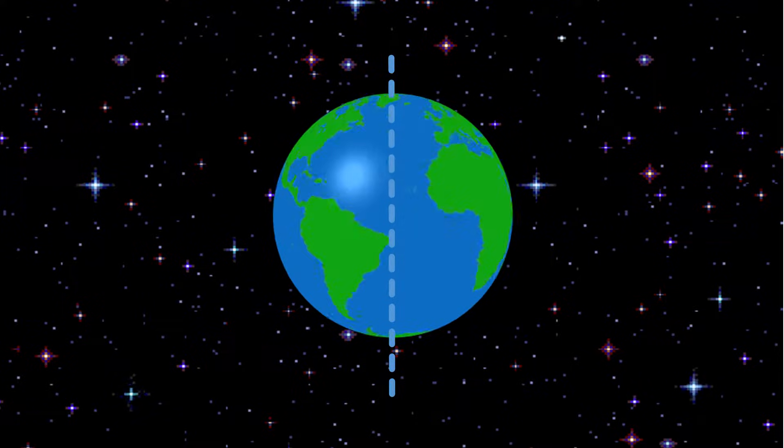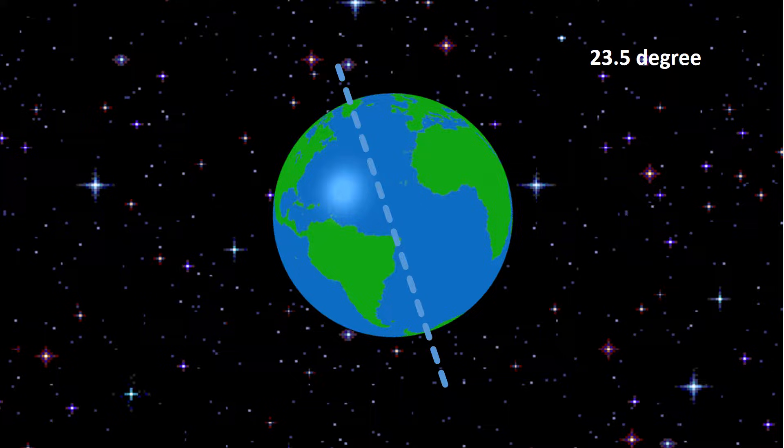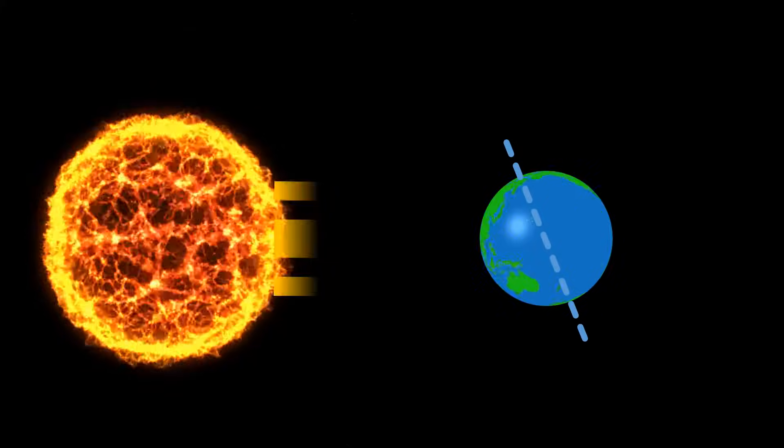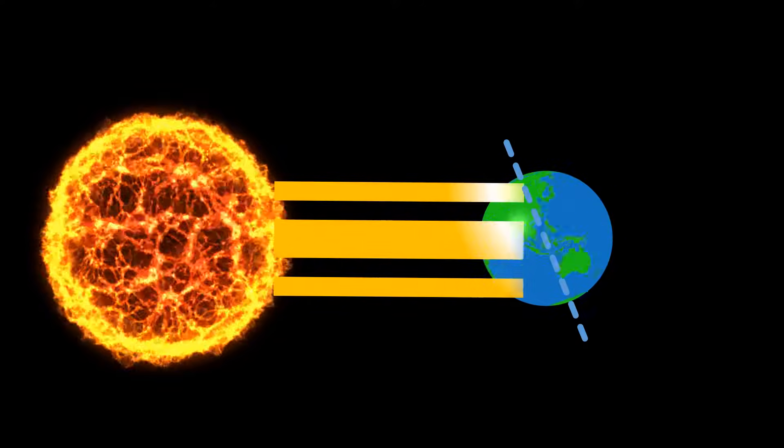Since the Earth's axis is tilted 23.5 degrees, day and night are not evenly divided. The length of day and night will be different in different places on Earth.